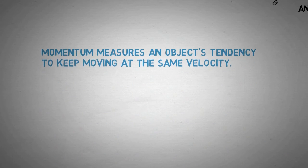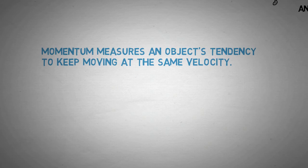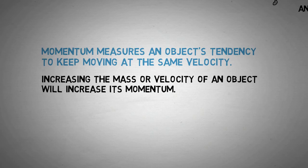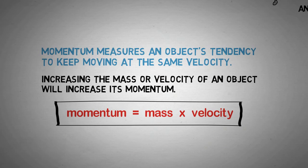To summarize, momentum measures an object's tendency to keep moving at the same velocity. Increasing the mass or velocity of an object will increase its momentum. And finally, we have the equation momentum equals mass times velocity. Thanks for watching!